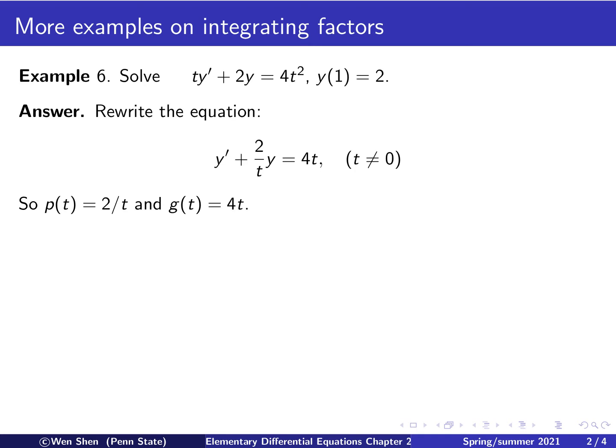Then we have the two functions p of t, which is what's in front of y, so it's 2 over t, and g of t, which is the right hand side, that is 4t.